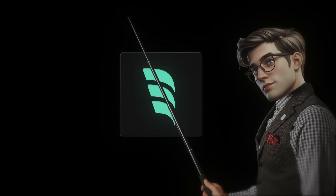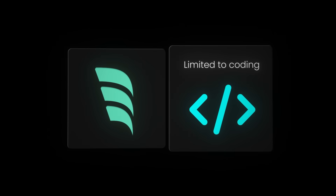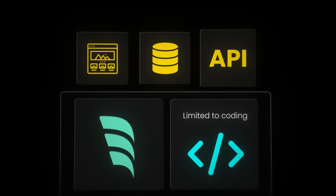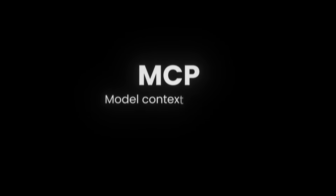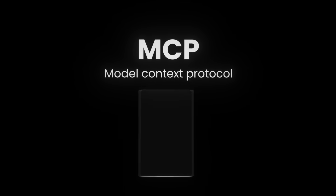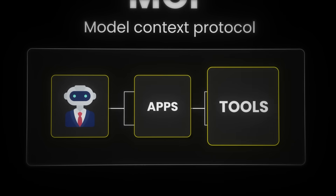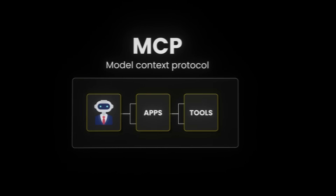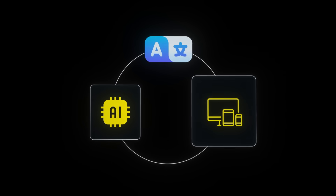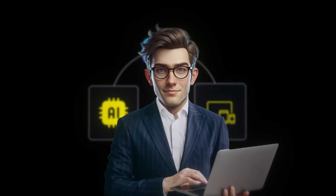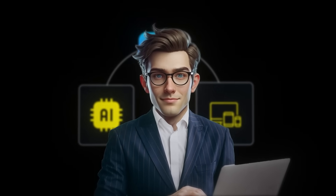AI coding assistants like Windsurf are limited to just generating code. If you need to interact with any web pages, databases or APIs, you're on your own. But that's where MCP — Model Context Protocols — come in. It's a standard that lets AI models communicate with apps and tools more easily. Think of MCP as a universal translator between AI assistants and digital tools — it creates a shared language that helps AI understand and control services in the real world.